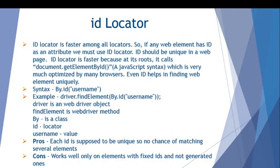The ID locator is faster among all locators. If any web element has an ID attribute, you must use the ID locator because IDs are unique. ID should always be unique on a web page — ideally it is unique, though sometimes developers make mistakes and ID is not unique. ID is fast because internally it calls the JavaScript method document.getElementById(), which is highly optimized by many browsers.